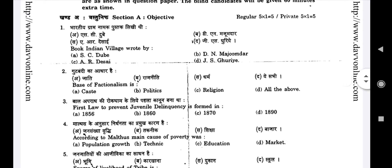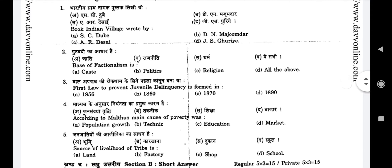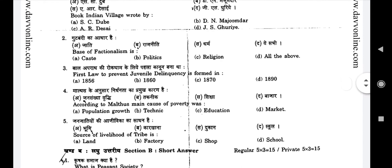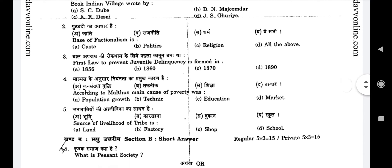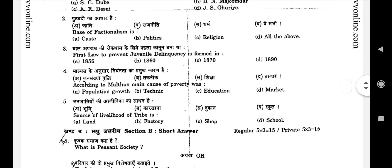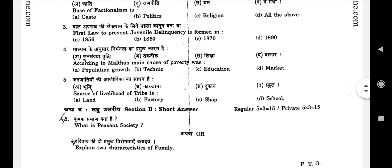Fourth question: According to Malthus (Malthus ke anusar niruddhanta ka pramukh karan hai), the main cause of poverty was — Option A: Population growth, Option B: Technique, Option C: Education, Option D: Market.